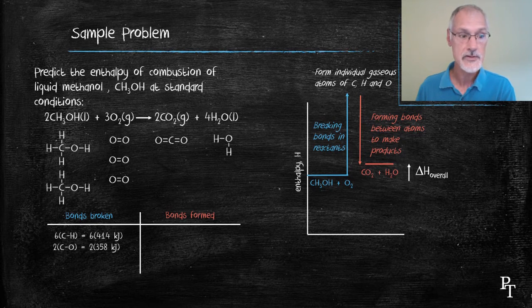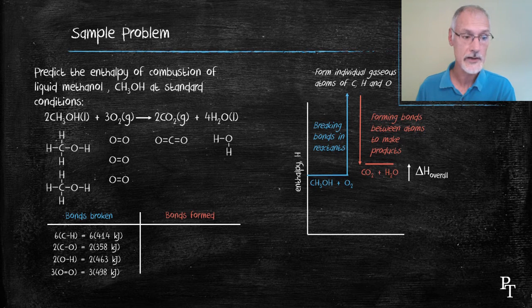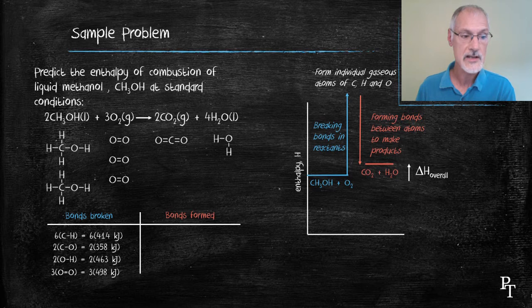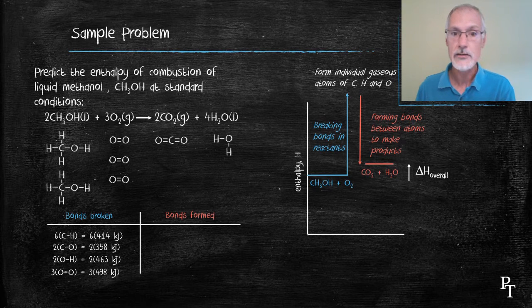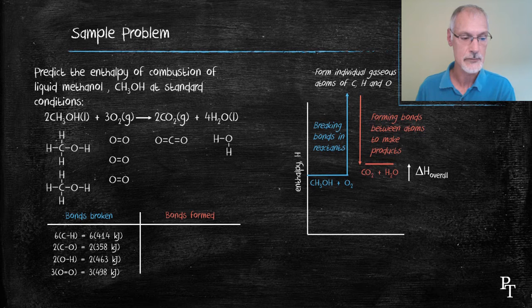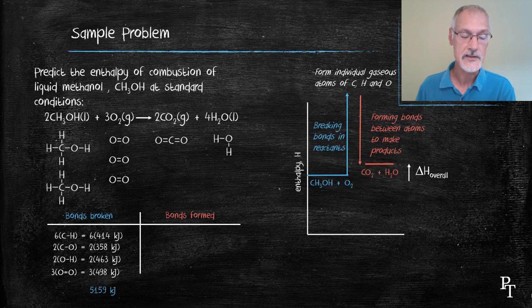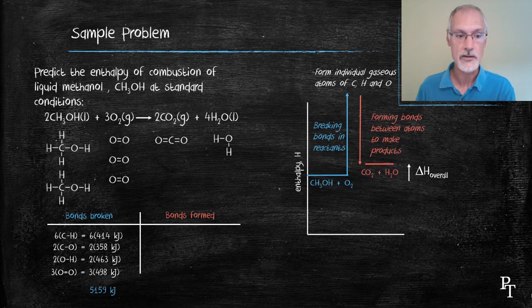So I have six carbon hydrogen bonds. I'll have two carbon oxygen bonds, two oxygen hydrogen bonds and three double bonded oxygen bonds. And I looked these up on table 12 in the IB Data Booklet. Summing it up, I require 5159 kilojoules of energy to break all those bonds.